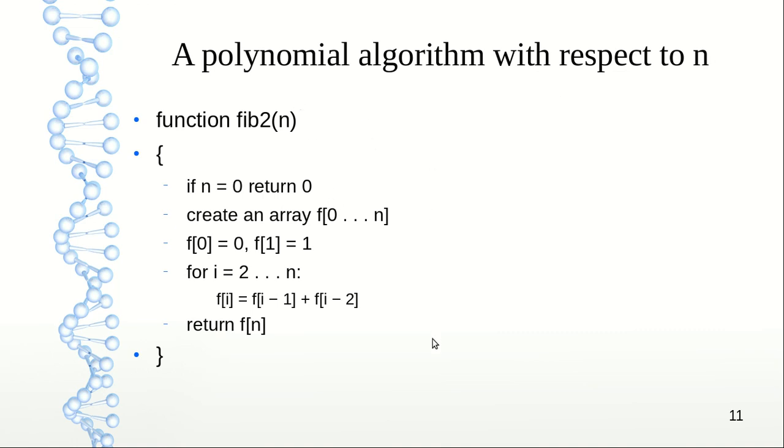You can go through this algorithm. If n equals 0, we return 0. Otherwise, we create array f[0] to f[n], and then for i equals 2 to n, we calculate f[i] equals f[i minus 1] plus f[i minus 2]. Then we return f[n].